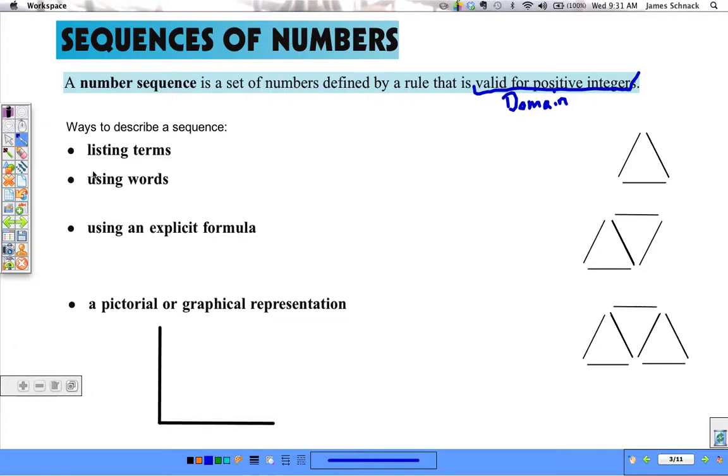There are different ways to describe a sequence. We can just list the terms, probably the simplest. We could use words like we did in the previous video. We could use an explicit formula, which is the algebraic rule for how we get the terms. Or we could use a pictorial or graphical representation.